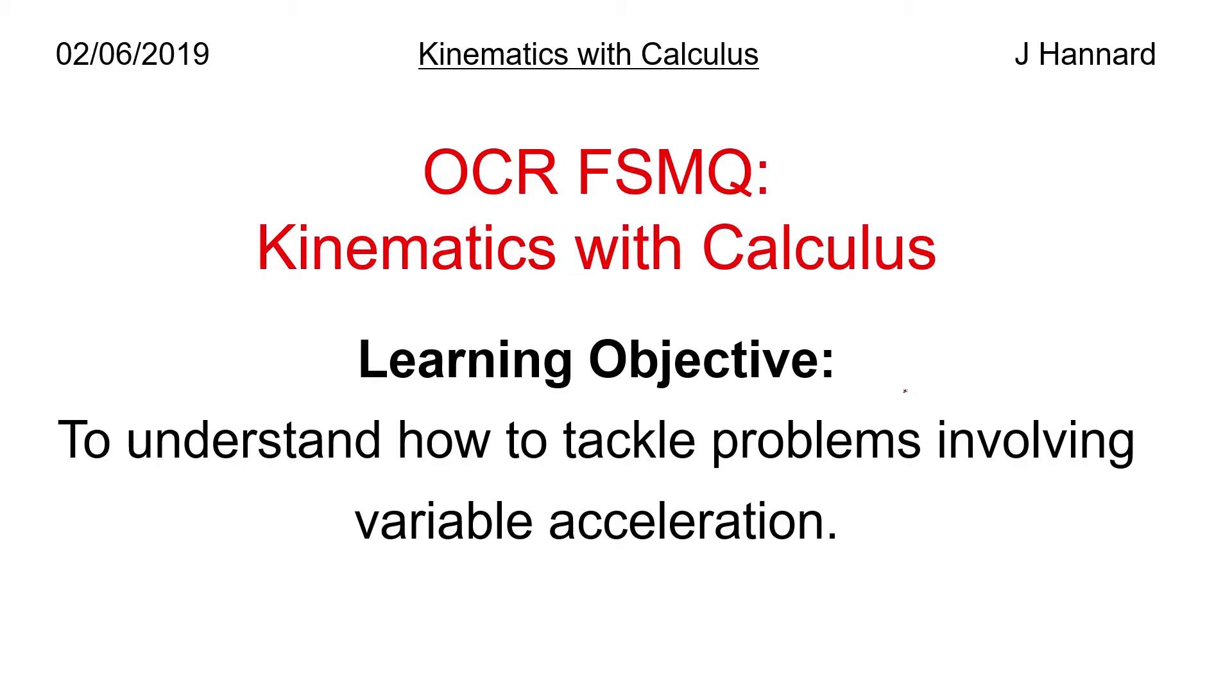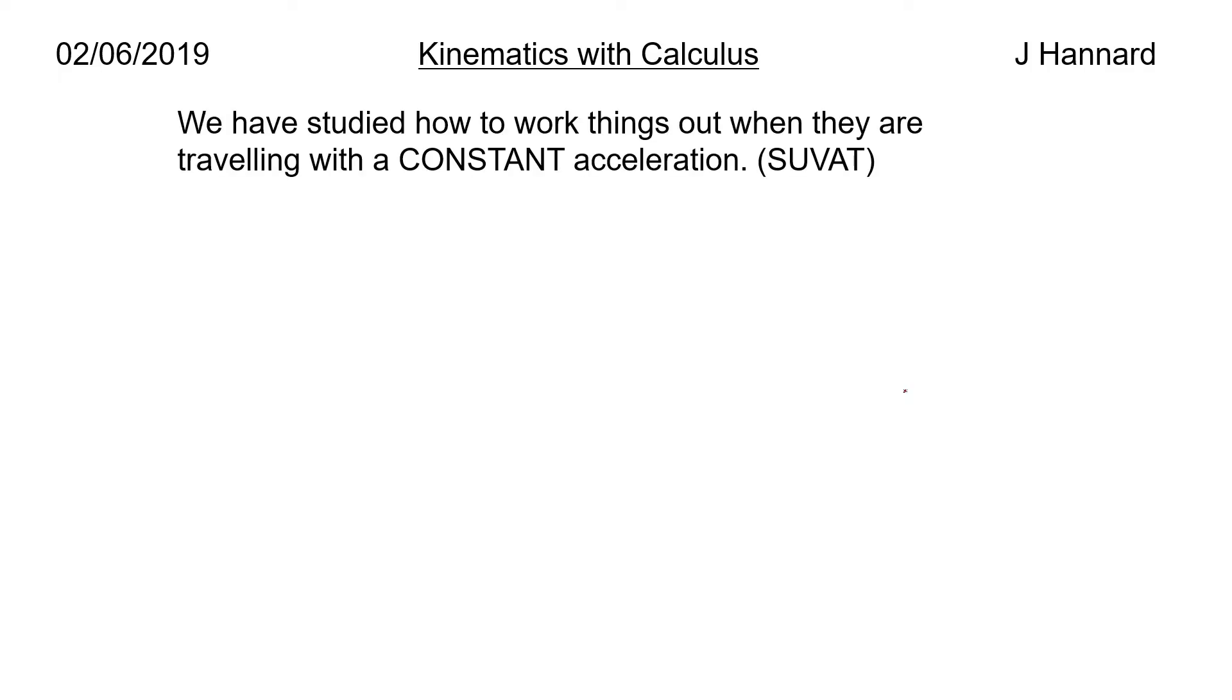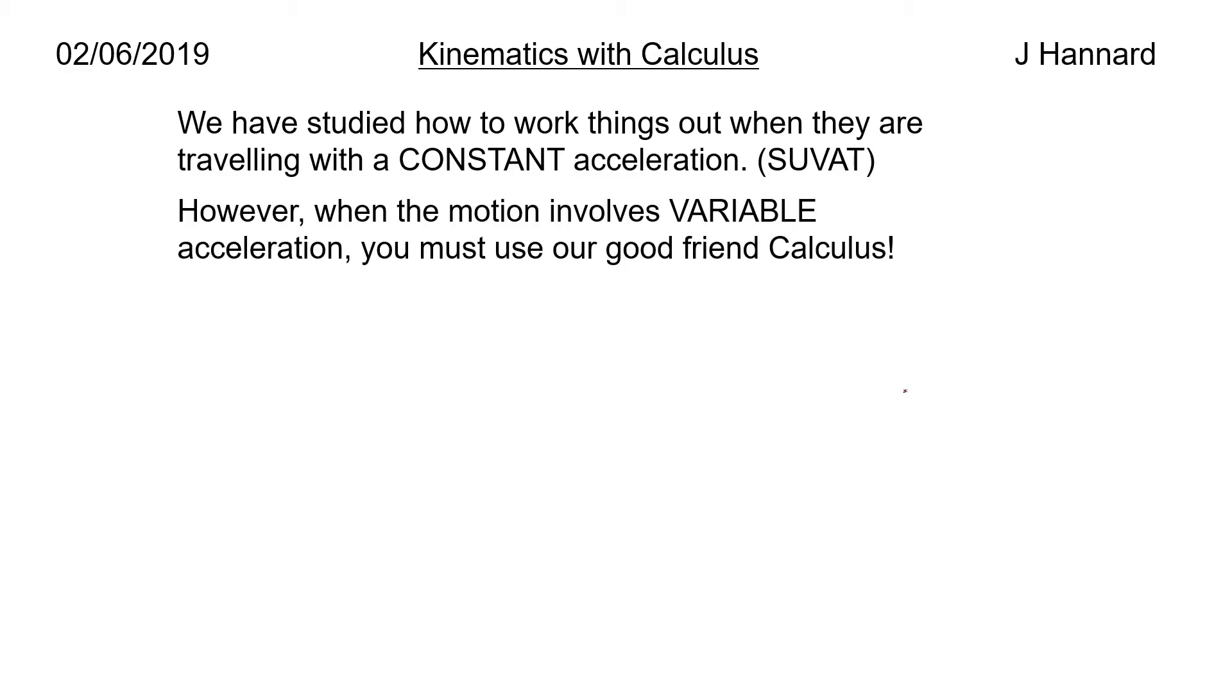In the last lesson, if you didn't catch it, we talked about constant acceleration and the SUVAT equations. Now we're talking about a more realistic scenario where acceleration may be variable. So let's get into it. We've studied how to work things out when they are travelling with a constant acceleration, i.e. what we did with SUVAT. However, when the motion involves variable acceleration, we must use our good old friend calculus, which we studied a little while ago.